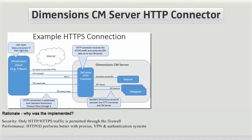HTTP or HTTPS can sometimes perform better with proxies, VPN, and authentication systems. The HTTP connector also allows the web client and admin console to run without applets. The connector essentially acts as a proxy to the Dimensions CM Server, and as a result there is minimal performance impact.